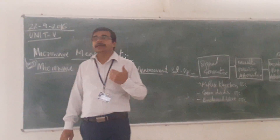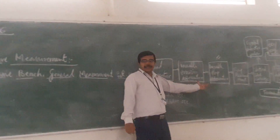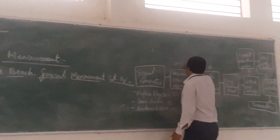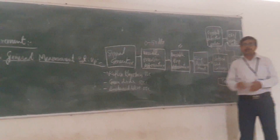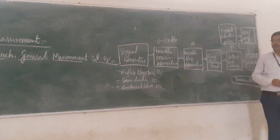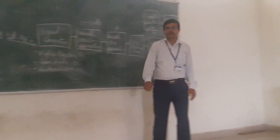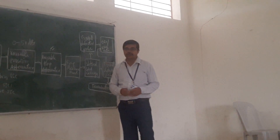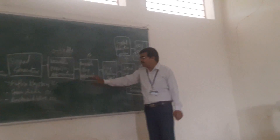Then there is the variable precision attenuator. It will provide the required attenuation. The attenuation range will be 0 to 50 dB. So you can go for attenuation from 0 to 50 dB.